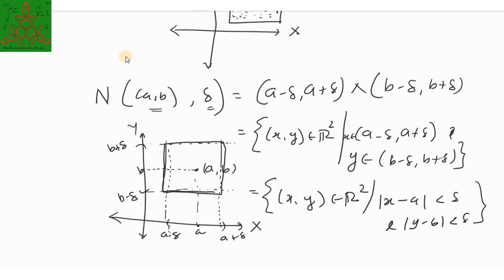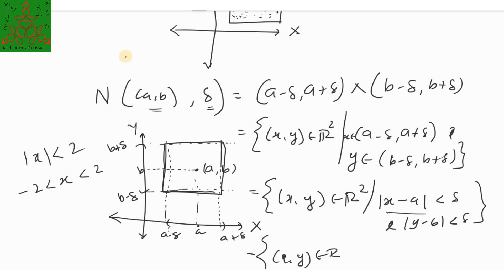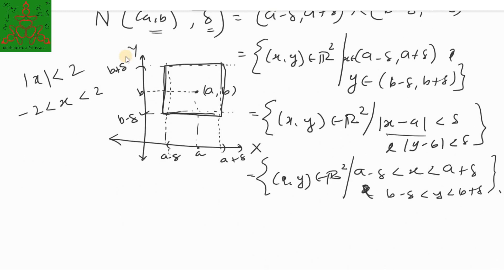We can also write this by removing the modulus: since |x| < some number implies x is between minus that number and that number, we can say the neighborhood is the set of all (x, y) in R² such that A minus delta < x < A plus delta and B minus delta < y < B plus delta. Some books also use alternative notation for this.